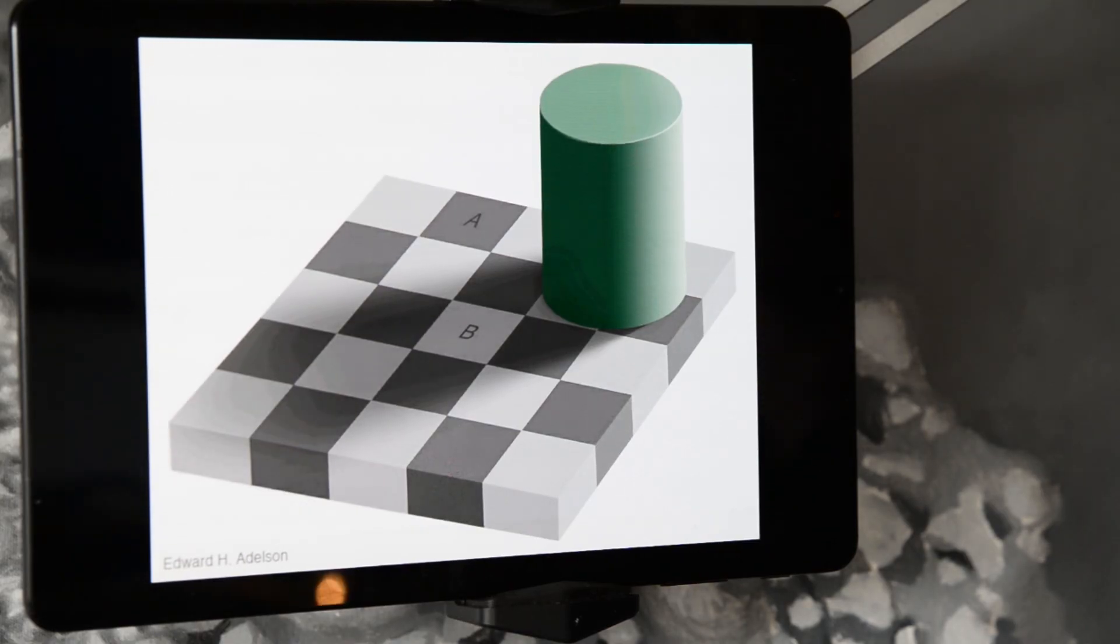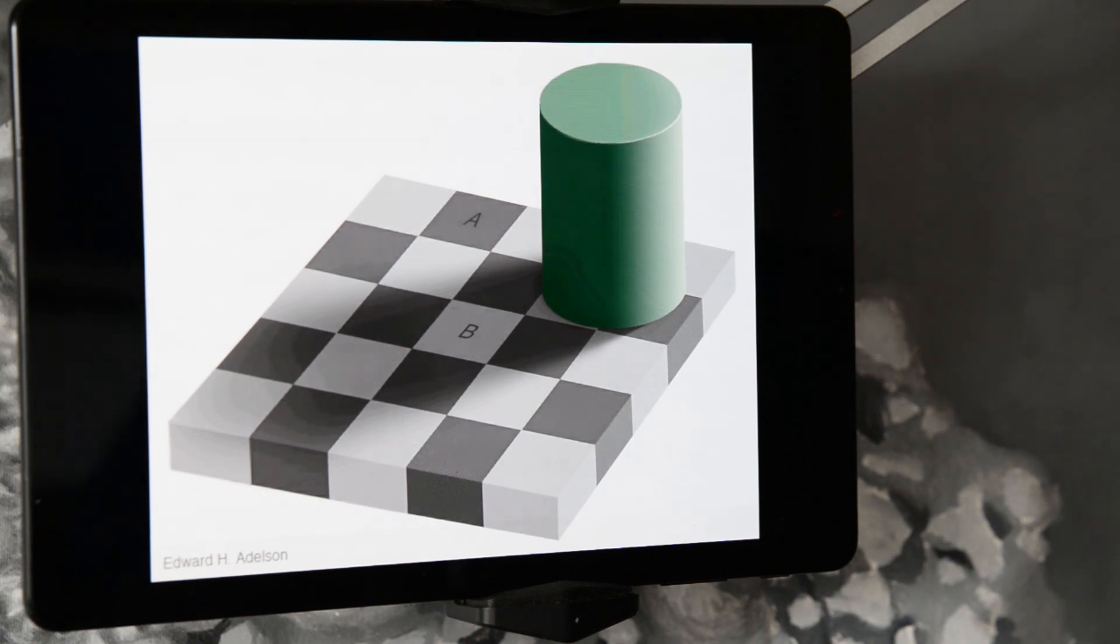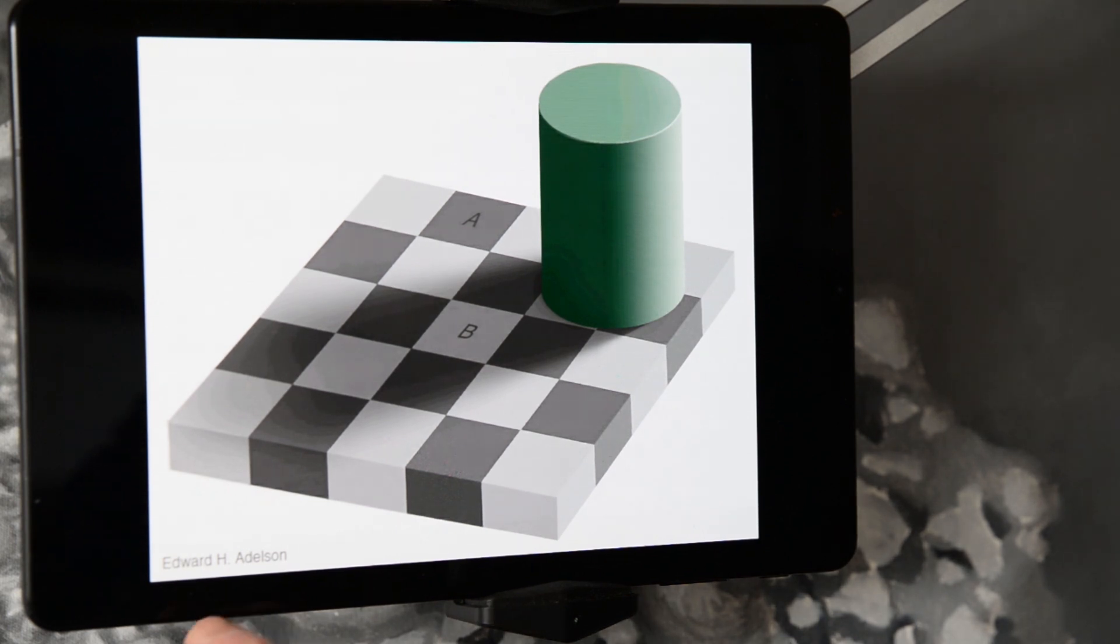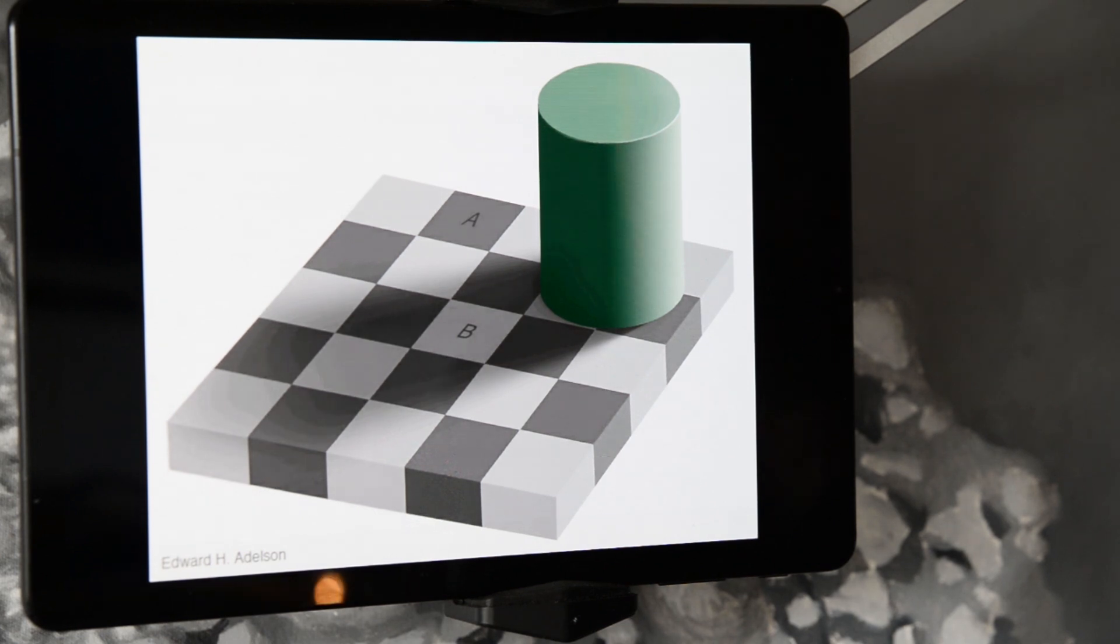And so this is one of my favorite tools in my own discovery of this process years ago. I think it's called a shadow illusion. It looks like it's got Edward Adelson on there. You can Google this image yourself. It's absolutely fantastic.